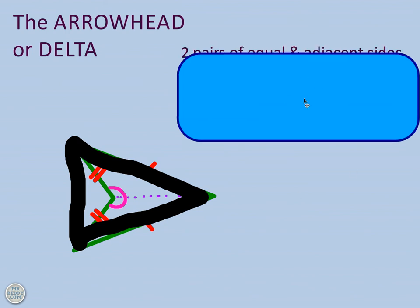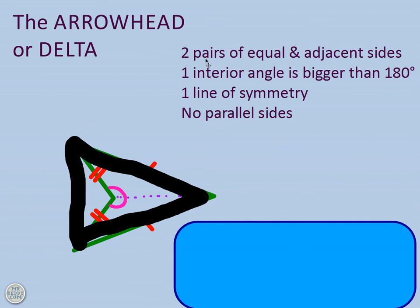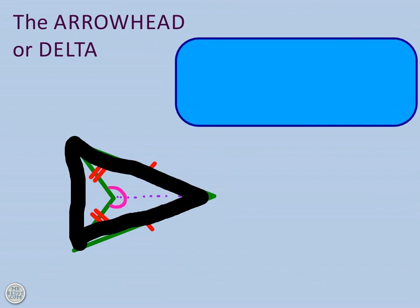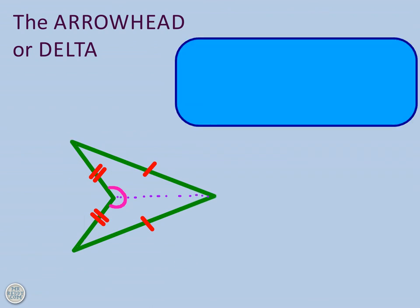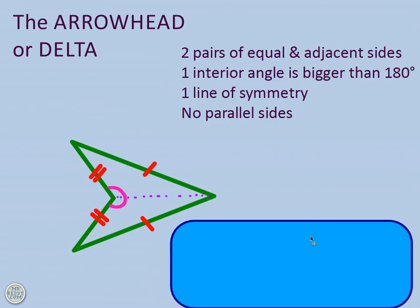So to summarize the properties then: it's got two pairs of equal and adjacent sides, one interior angle that's bigger than 180 degrees, one line of symmetry, and no parallel sides.